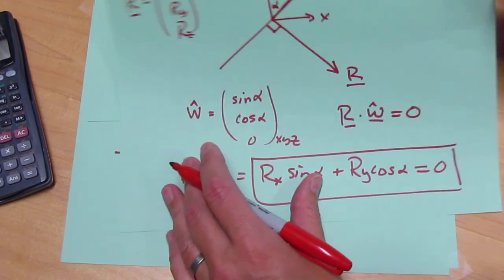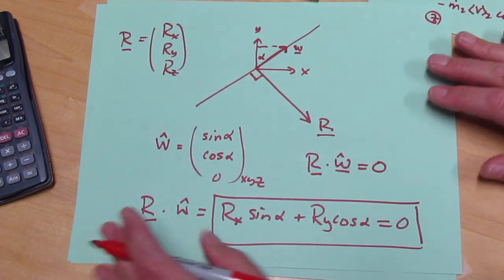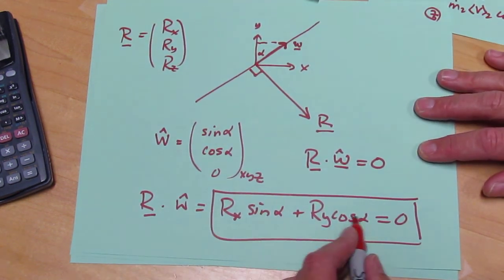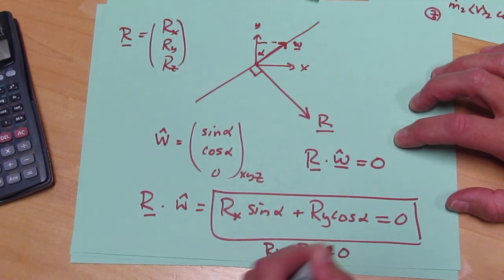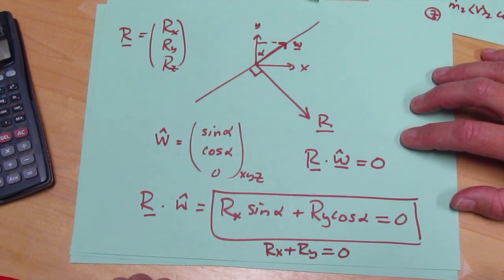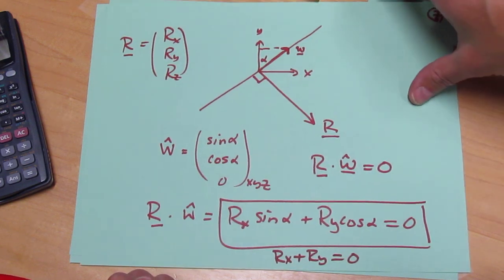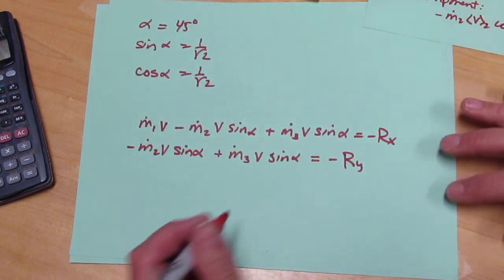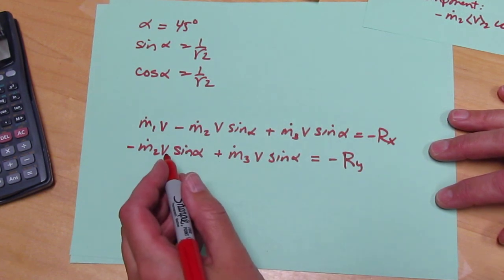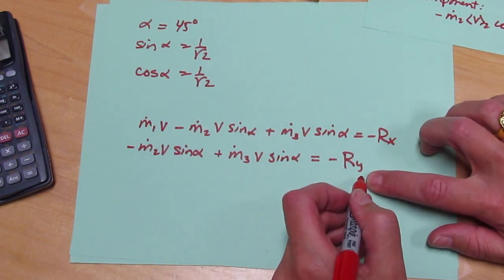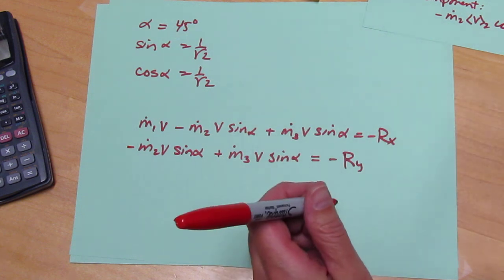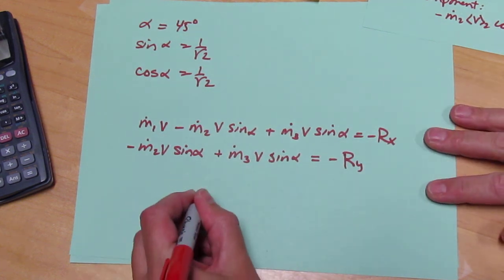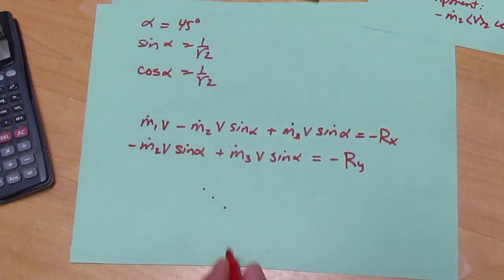Going back to this equation that we got from the perpendicular condition, if sine and cosine are equal, then this becomes Rx plus Ry equals 0. So, I can use that in my algebra, by adding these two up, Rx plus Ry is equal to 0, and I can just do the algebra, and eventually, without too much trouble, we end up with the final result.